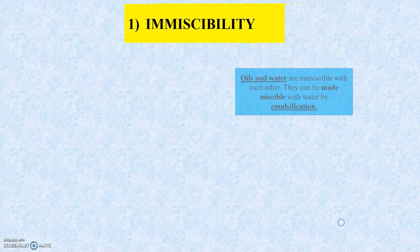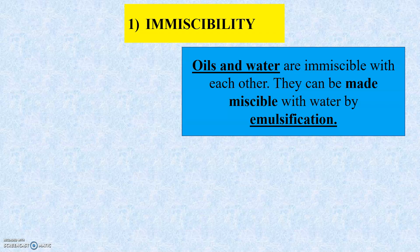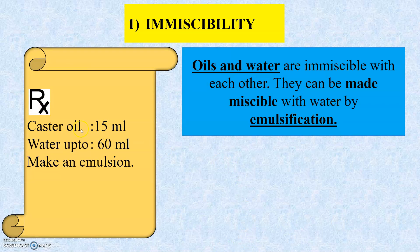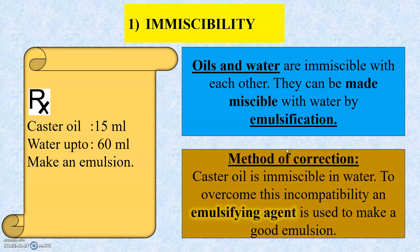The first reason is immiscibility. As we know, oils and water are immiscible with each other. In this prescription, the ingredients are castor oil and water, and we have to make an emulsion. Since oil and water are immiscible, the method of correction is to use an emulsifying agent — for example, gum acacia or tragacanth — to make a good emulsion.